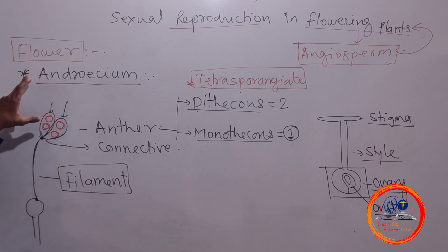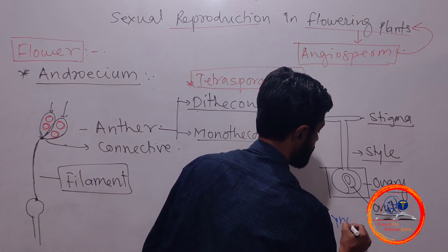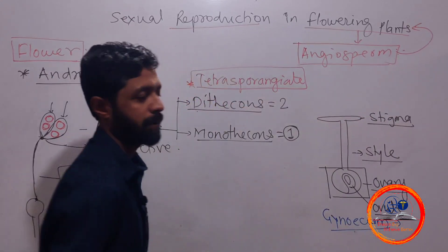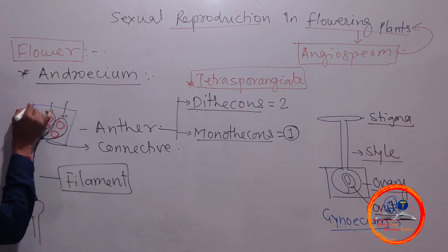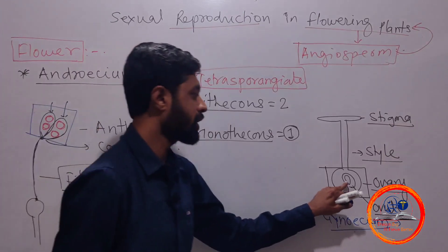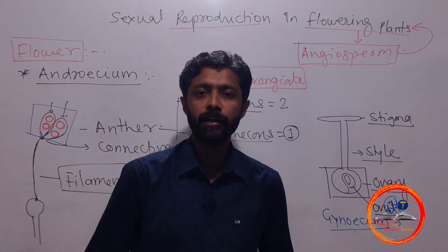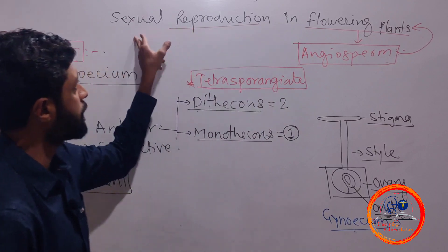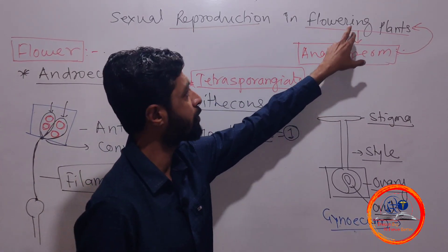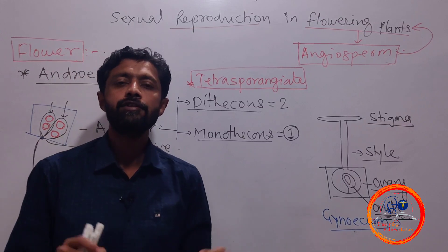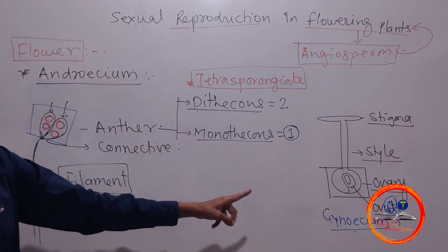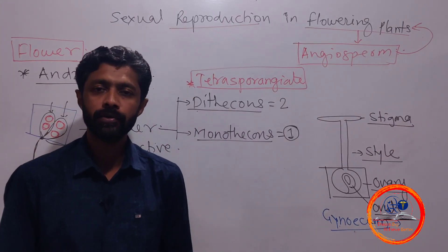The ovary is the fertile part of the gynoecium. The anther is the fertile part of the androecium and the individual member of androecium is called stamen. For performing sexual reproduction in angiosperms, a vital part is the flower, and inside the flower the androecium and gynoecium are the two essential floral whorls needed for sexual reproduction.